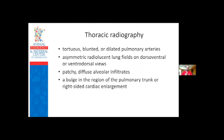Classic radiographic findings include tortuous blunted pulmonary arteries, asymmetric radiolucent findings in the lungs - for example, if a massive PTE blocks a large branch pulmonary artery, the branches distal to it won't receive blood, leaving one part of the lungs very radiolucent without visible vasculature. Patchy diffuse alveolar infiltrates are probably one of the more common things I see in dyspneic dogs with pulmonary hypertension, or a bulge in the region of the pulmonary trunk and/or right heart enlargement.